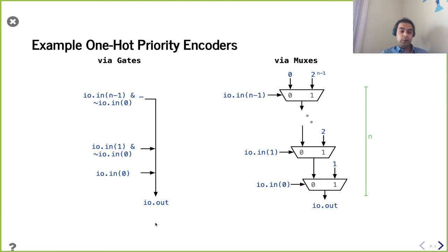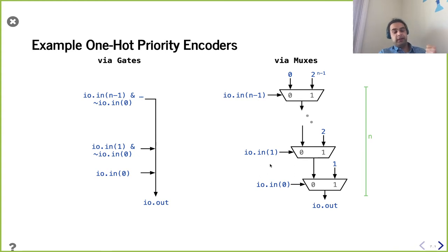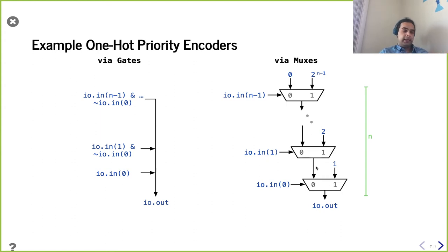Alternatively, another way to capture this precedence is with a bunch of cascaded muxes. No matter what comes in, if `io.in[0]` is one, the output's going to be one — the lowest bit is the priority winner. If it's zero, we look at the next mux. This goes all the way back, and there are going to be N terms total. Just two different ways of doing it, and we'll see it on the next slide.